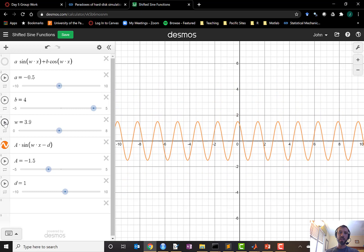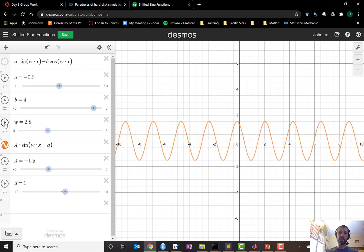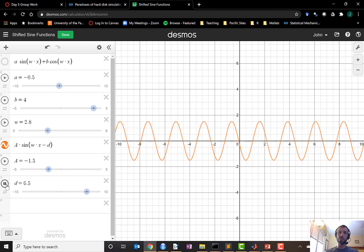Messing with w of course increases or decreases the frequency, and now the parameter d will control how much that wave is shifted to the left or right.